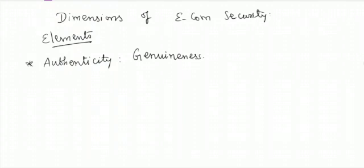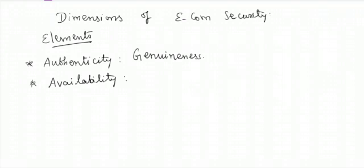The next dimension is availability. The data must always be available — it should not be removed and there should be no data delay. The data must always be present. That is your availability.